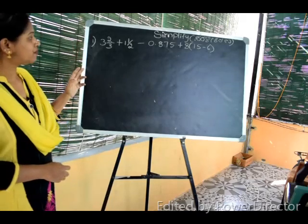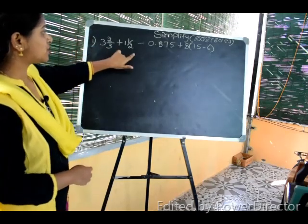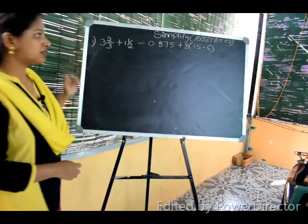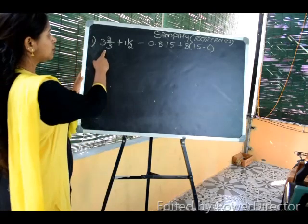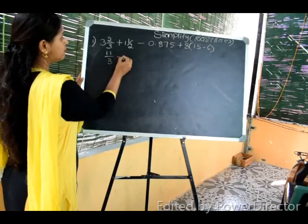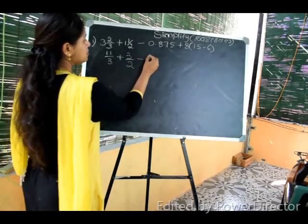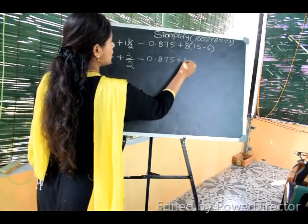We need to simplify the problem by converting mixed fractions. 3 2/3 is 9 plus 2 is 11 by 3. 1 1/2 is 2 plus 1 is 3 by 2. Minus 0.875 plus 8.